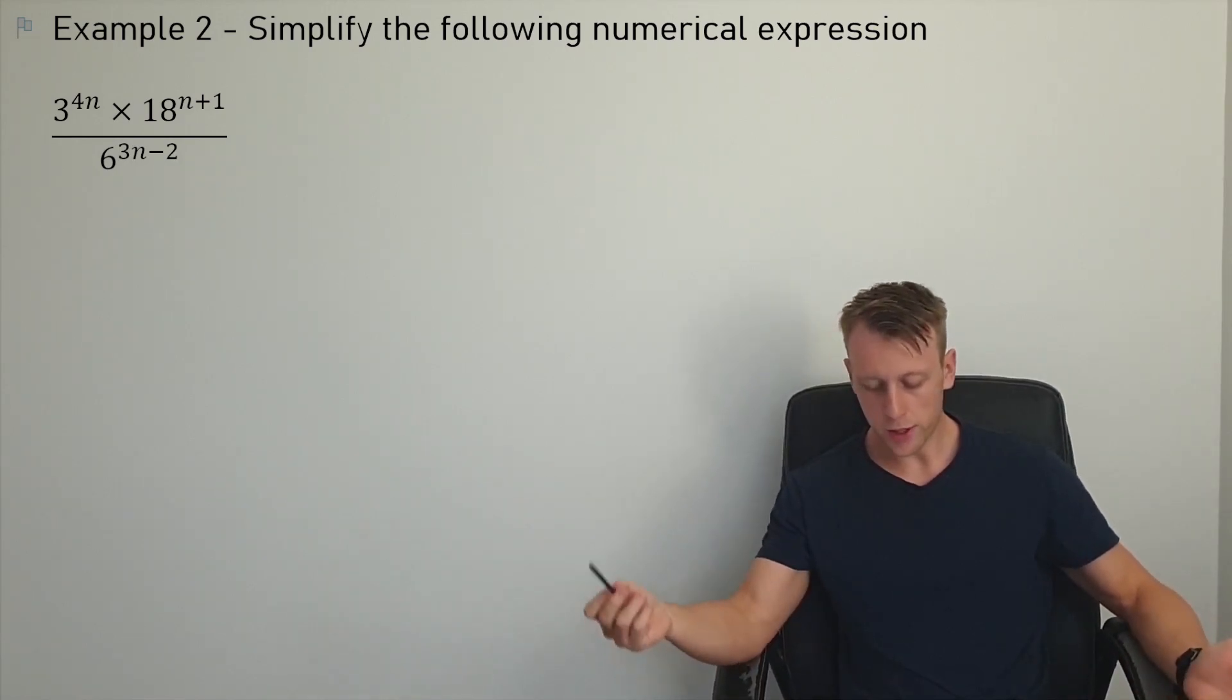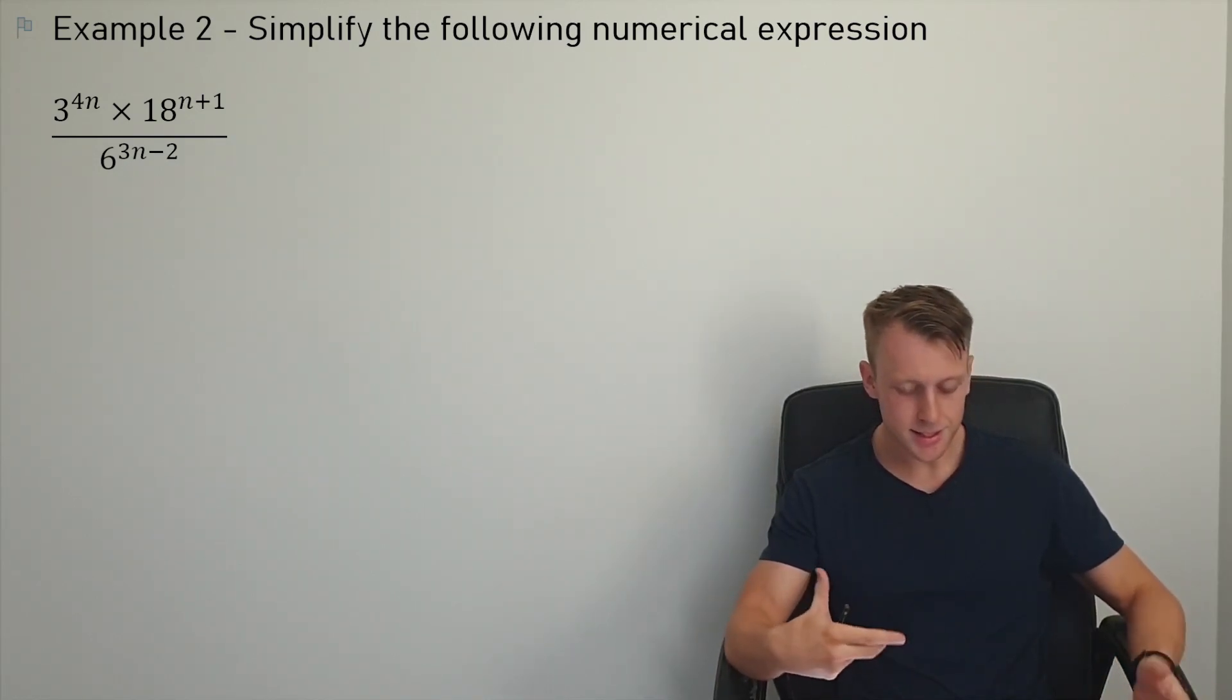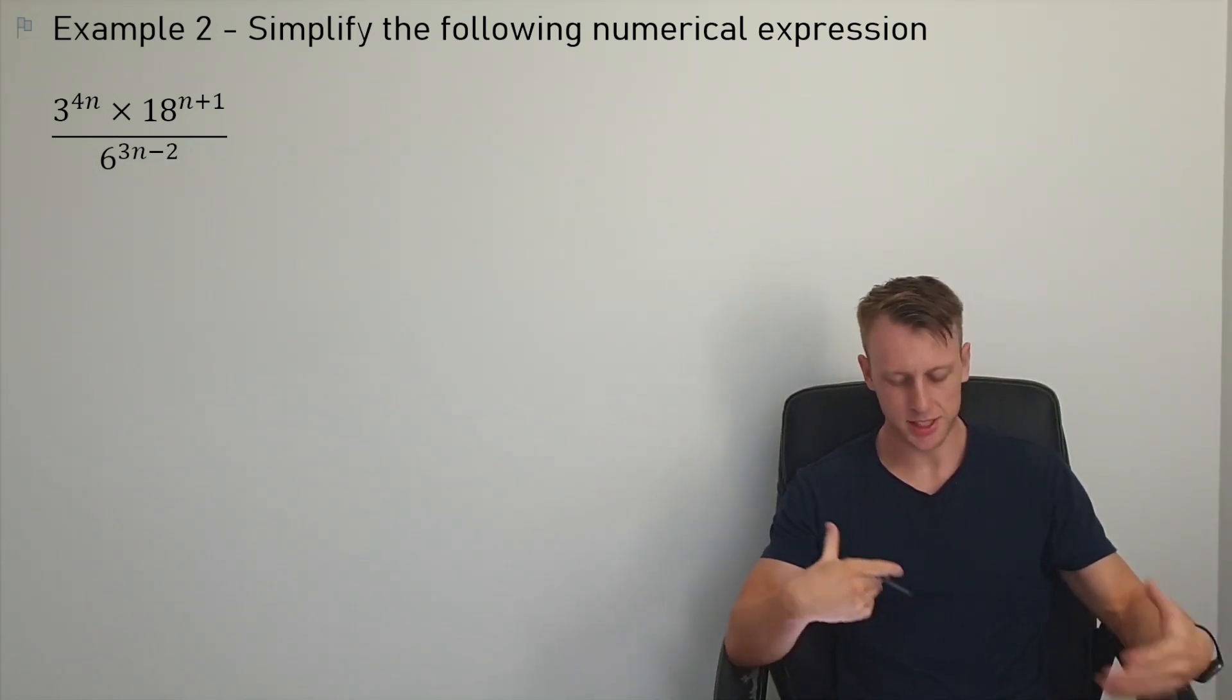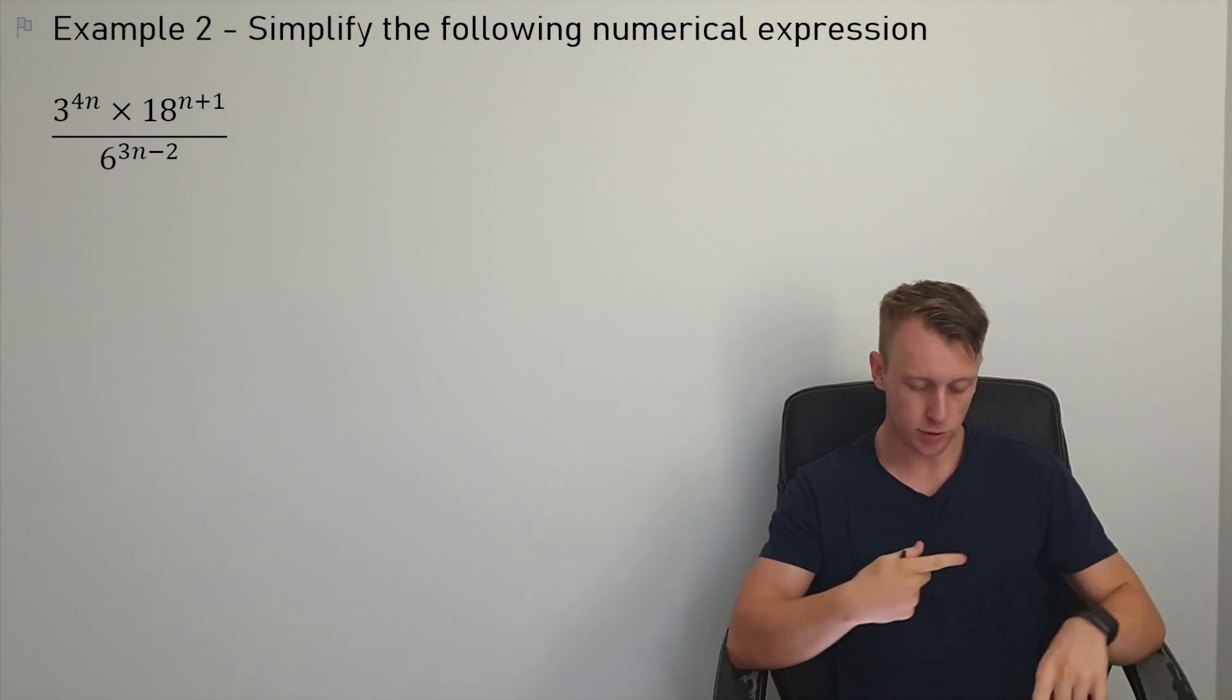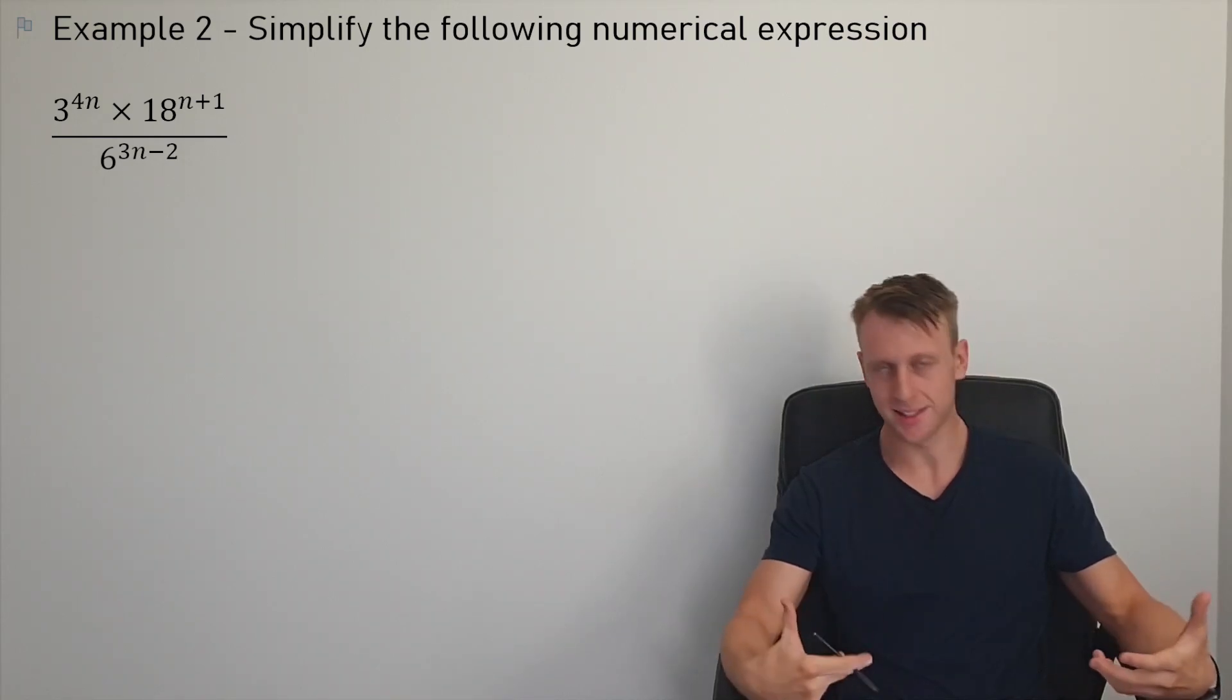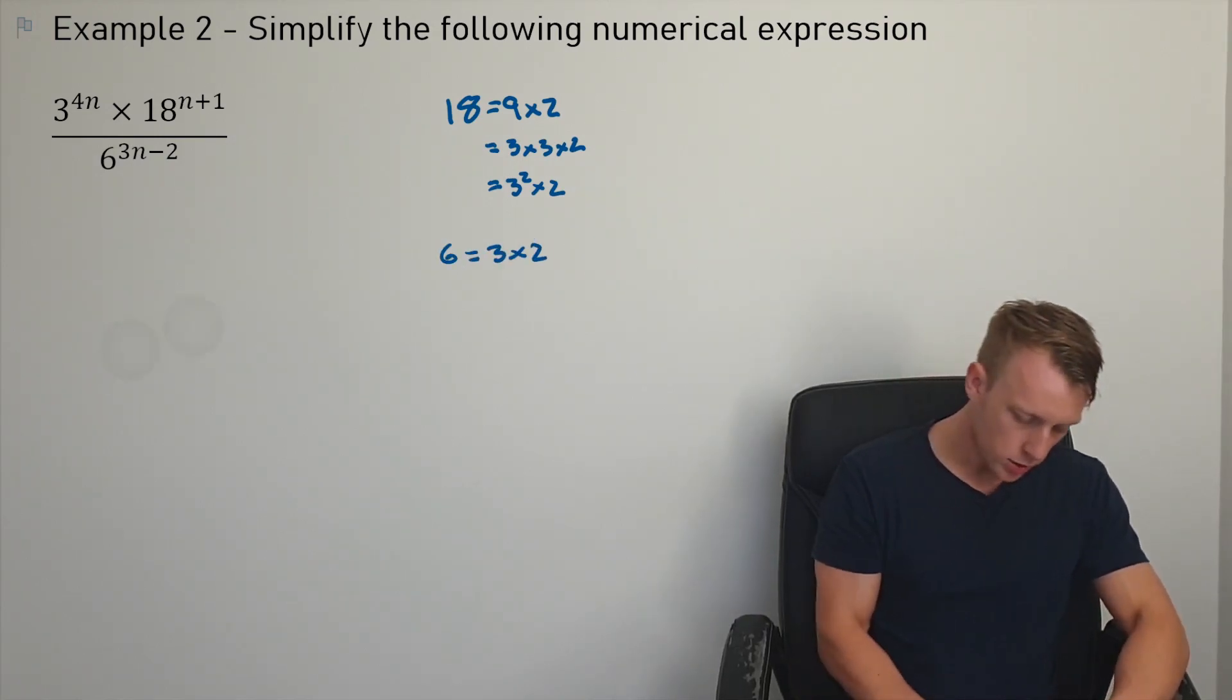Good example here, simplify the following numerical expression. Again, we're still going to be using our indices here. However, since it is a numerical expression, we more or less just need to treat the numbers as if they were just a's and b's. First problem is though, is we've got a 3, an 18, and a 6. What we need to do is simplify those base numbers into their smallest form. And so I'd use prime factorization. 18 is 9 times 2, and 9 is just 3 times 3. So it's just 3 squared times by 2, and I know that 6 is equal to 3 times by 2. So I can take the expression here and just rewrite it.